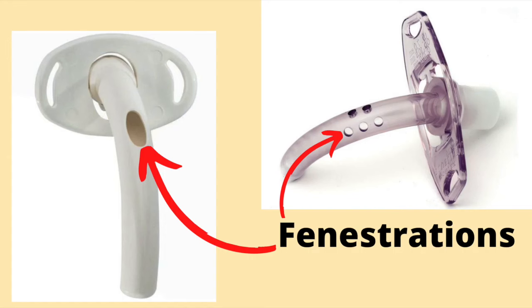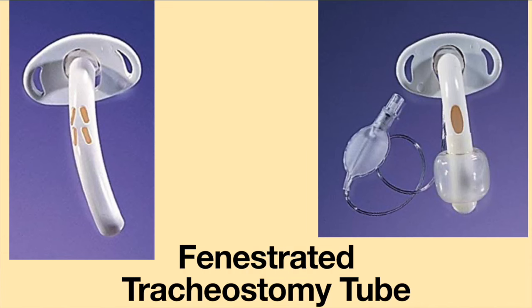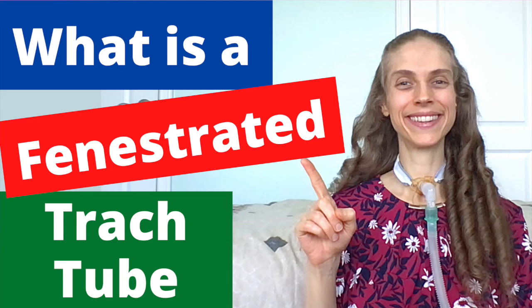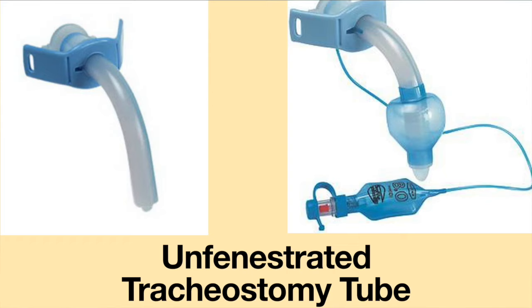On some tracheostomy tubes, there are holes in the shaft. These are called fenestrations. There can be one hole or multiple holes in the shaft. A tracheostomy tube which has one or multiple holes in the shaft is called a fenestrated tracheostomy tube. For more information, please see the video "What is a fenestrated tracheostomy tube?" If there are no holes in the shaft, this is called an unfenestrated tracheostomy tube.